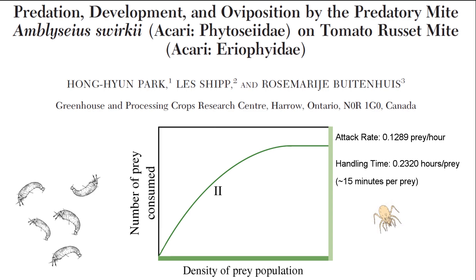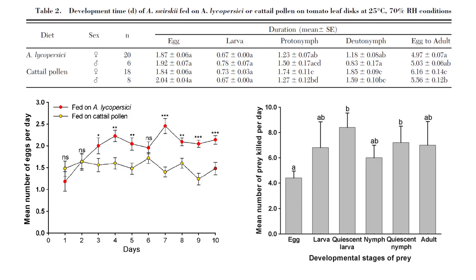These results indicate Amblyseus swirskii can consume approximately 103.4 tomato russet mite individuals per day. Developmental time of female swirskii fed on tomato russet mite at 25 degrees Celsius was 4.97 days, and on cattail pollen, 6.16 days. The 5-day developmental time of swirskii fed on tomato russet mite was shorter than that of tomato russet mite at the same temperature in a 2003 report by Hawk and Kauai, which was 5.5 days at 25 degrees Celsius for the russet mites. Crucially, biocontrol agents that reproduce quicker than their targets are likely to overmatch the population, especially if they have a high attack rate.